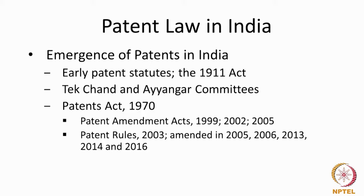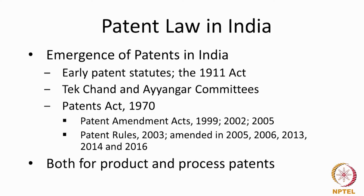Soon after amending the Act, the rules were also amended. The rules are subsidiary to the Act — they are what we call delegated legislation. The central government has the power to make the rules, whereas the Acts have to be passed in both houses of parliament. There was a substantial turnover in 2003 where new rules were framed, amended in 2005, 2006, 2013, 2014, and most recently in 2016. With the amendment of the Patents Act in 2005, India now offers product and process patents irrespective of the technology. The two kinds of patents broadly that can be granted under the Indian Patents Act are either for a product or for a process.